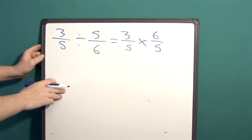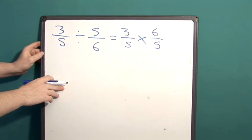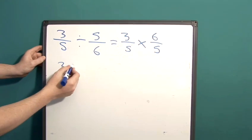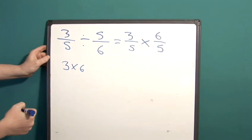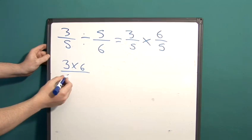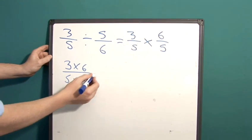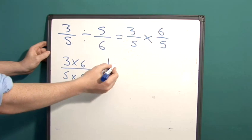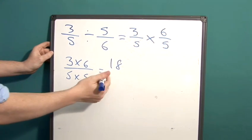And now multiplication of fractions is a much easier skill. What we do is we multiply the 3 and the 6 on the numerator and we multiply the two 5s on the denominator. 3 times 6 is 18 and 5 times 5 is 25.